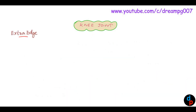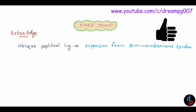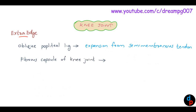Let's have some more points about the knee joint. The oblique popliteal ligament is an expansion from the semimembranosus tendon. The fibrous capsule of the knee joint is deficient anteriorly and has two gaps: one is for the suprapatellar bursa and another is for the exit of the popliteus tendon.